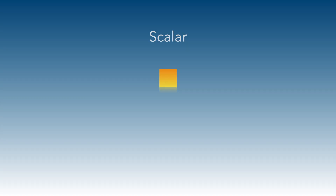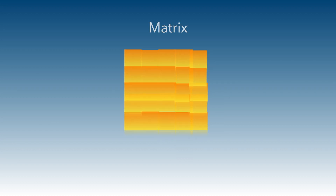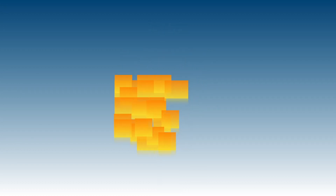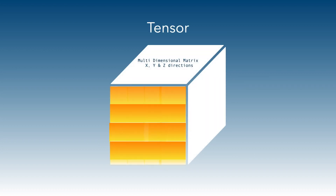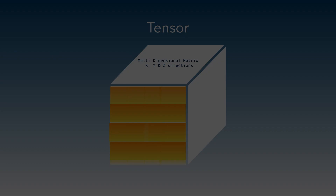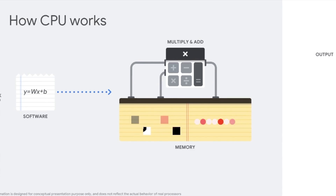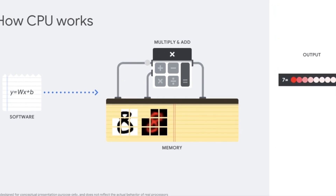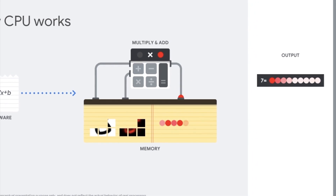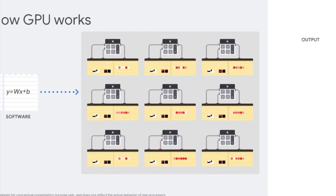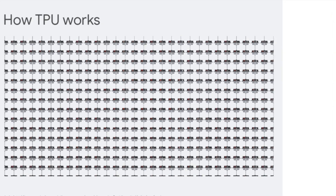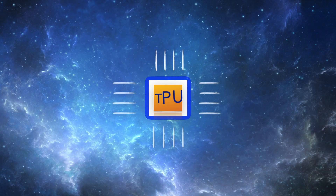Scalar is a rank zero tensor. Vector is a rank one tensor. Matrix can be used as rank two. A tensor has magnitude and direction and is a multi-dimensional matrix. So, coming back to the name of CPU — because of this progression of processor design from scalar to vector to matrix, all these can be called under a more accurate name: TPU, a tensor processing unit.